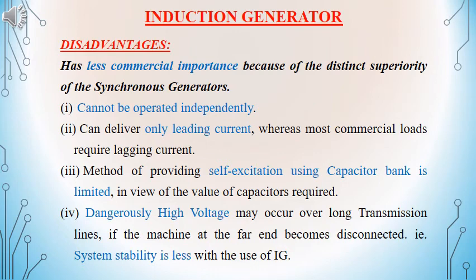The self-excitation that can be provided by using a capacitor bank is limited, because otherwise it would require large values of capacitance. In the case of large transmission lines, if suddenly any of the loads is disconnected, there can be a dangerously high voltage built up in the system. And because of the same, the system may not always be stable.